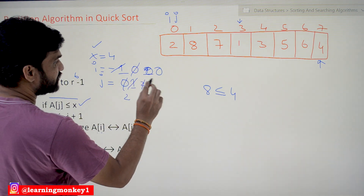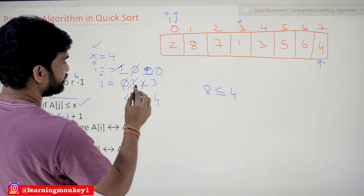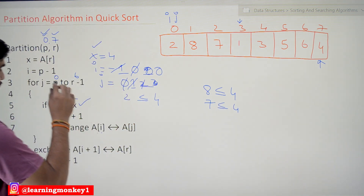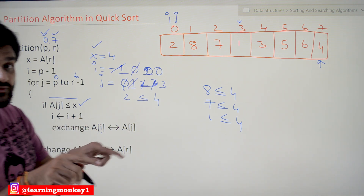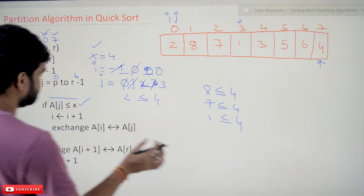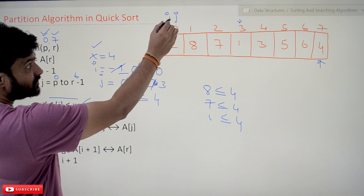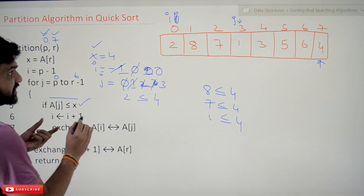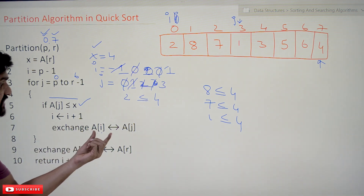In the next iteration, j is equal to 2. a[2] is 7. Is 7 less than or equal to 4? No, it is not true. j increments to 3. a[3] is 1. Is 1 less than or equal to 4? Yes, it is true. Now this is the point where you will get complete clarity about the partition algorithm. Since the condition is true, i is incremented: i was 0, so now i becomes 1. j has moved to index 3 while i is still at index 1. Now we must exchange a[i] with a[j].